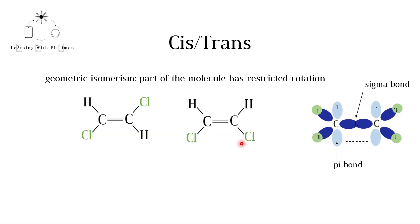Remember that double bonds consist of a sigma and a pi bond. Rotation around this bond would break the pi bond. For more on this, please watch the molecular orbitals sigma and pi bonding video. Because you cannot convert between these two molecules without breaking and reforming the double bond, they are not the same molecule, but isomers.